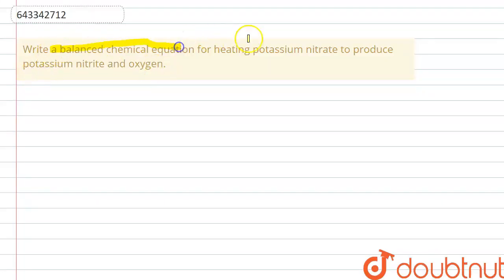In this question they have given us a reaction that is taking place when potassium nitrate is heated, and the products also they have given us, that is potassium nitrite and oxygen, and we have to give the balanced equation for it.